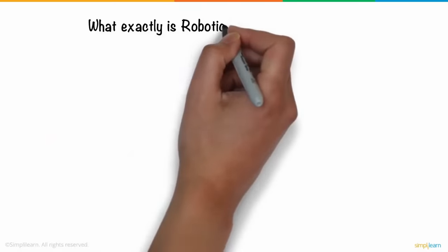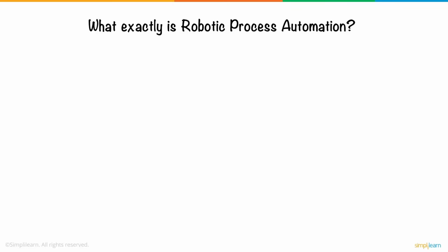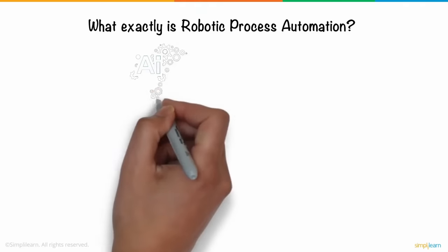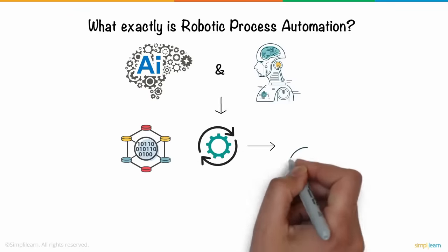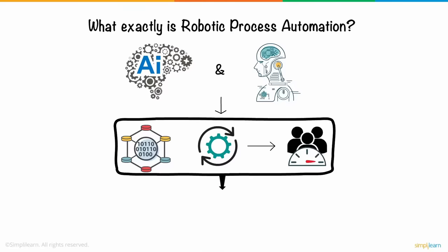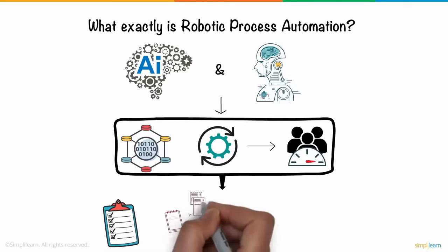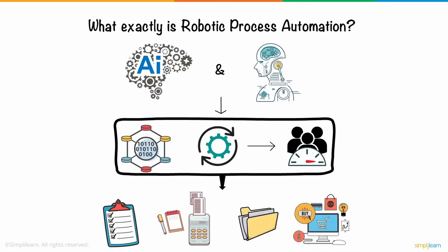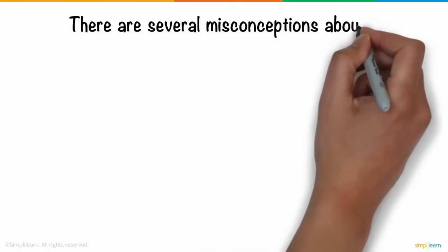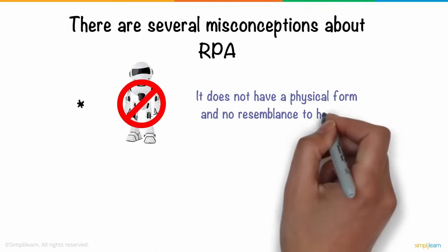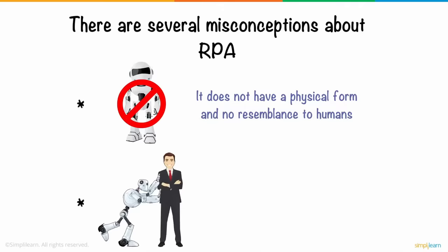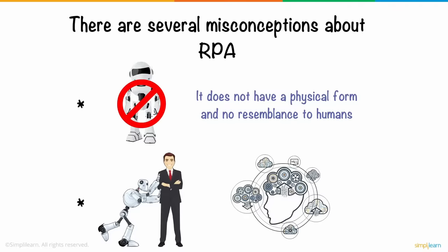So what exactly is Robotic Process Automation? RPA is the use of software with artificial intelligence and machine learning capabilities to handle high-volume repetitive tasks that previously required humans to perform. Some of these tasks include addressing queries, making calculations, maintenance of records, and performing transactions. There are several misconceptions about RPA. RPA is not a humanoid robot — it does not have a physical form and no resemblance to humans. RPA cannot replace humans or replicate human cognitive functions, and cannot perform logical or critical thinking as humans do.